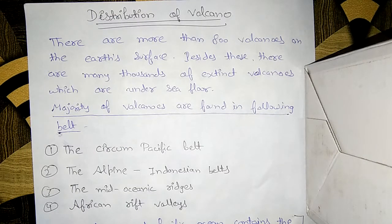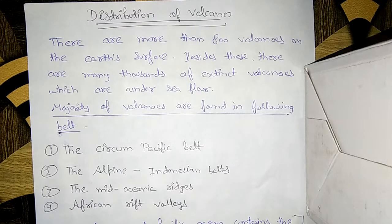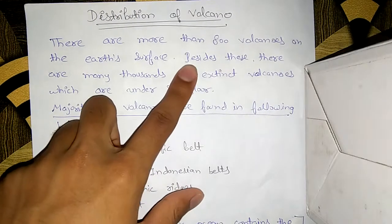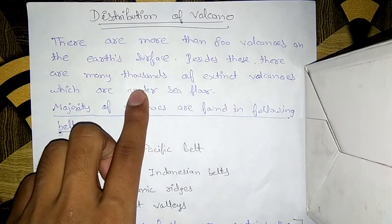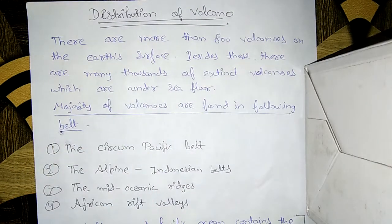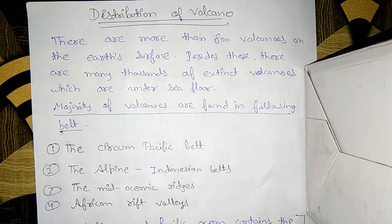In this video we are going to learn about the distribution of volcanoes on Earth. There are more than 800 volcanoes that are active nowadays, and besides these there are many thousands of extinct volcanoes which are under the seafloor. These extinct volcanoes do not erupt now — they have stopped erupting.